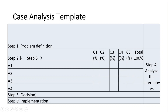In step five, you choose the one alternative which has the highest score in these boxes — that becomes your decision. In step six, you write using theory what the different steps should be to implement that particular decision.